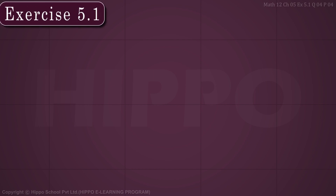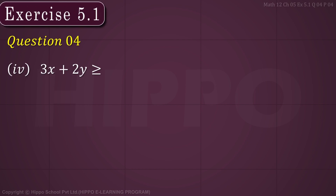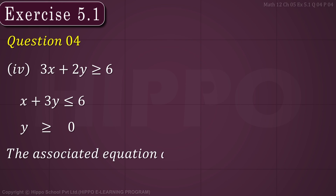Exercise 5.1, Question 4, Part 4: 3x + 2y ≥ 6, x + 3y ≤ 6, y ≥ 0. The associated equations are: 3x + 2y = 6, which is Equation 1, and x + 3y = 6, which is Equation 2.